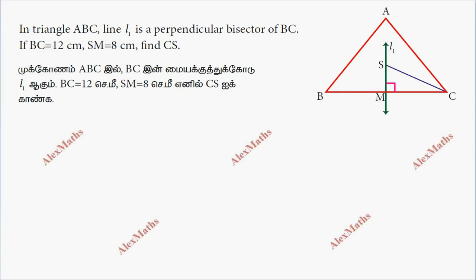Hi students, this is Alex here. You have triangle ABC, a line L1, and the perpendicular bisector of BC. Since it is a perpendicular bisector, BM will be equal to MC. BM will be the value of 12, so BC is 12 and MC is 6 cm.